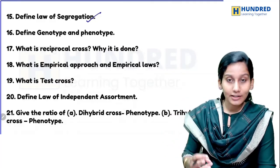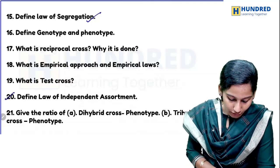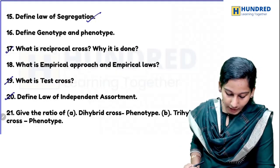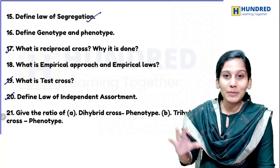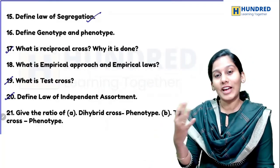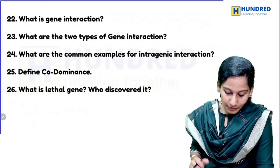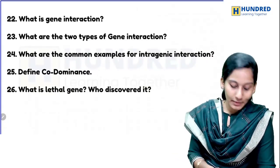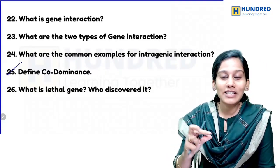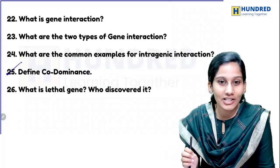Topics include test cross, back cross, and reciprocal cross — all very important questions. Monohybrid, dihybrid, and trihybrid crosses are five-mark topics but can also be learned for two marks. Co-dominance and incomplete dominance are covered, as well as Mendel's related laws in classical genetics.